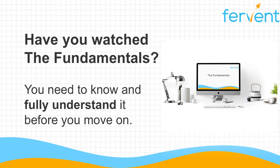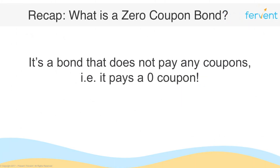I'm going to assume that you watched the fundamentals video and that you understand the process of discounting future cash flows. So let's have a quick recap. When we looked at the types of bonds, we looked at a zero coupon bond and said that it's a bond that does not pay any coupons — in other words, it pays a zero coupon, hence the name.